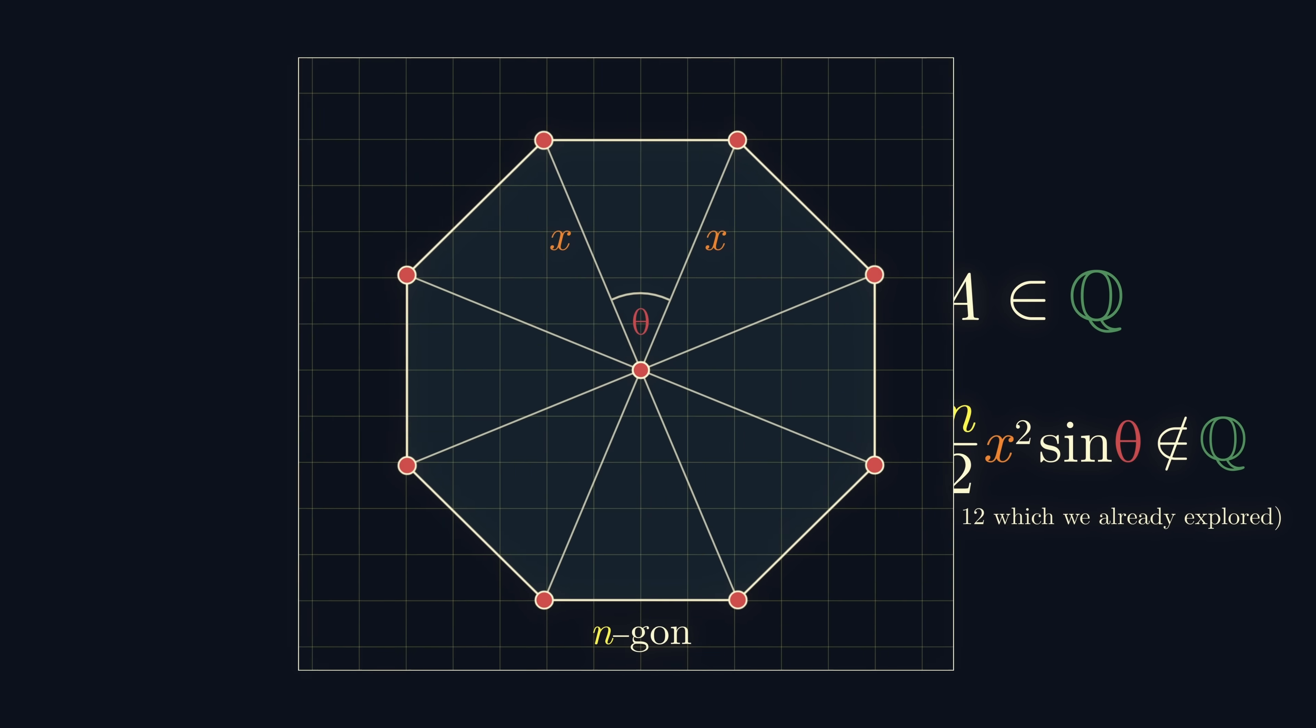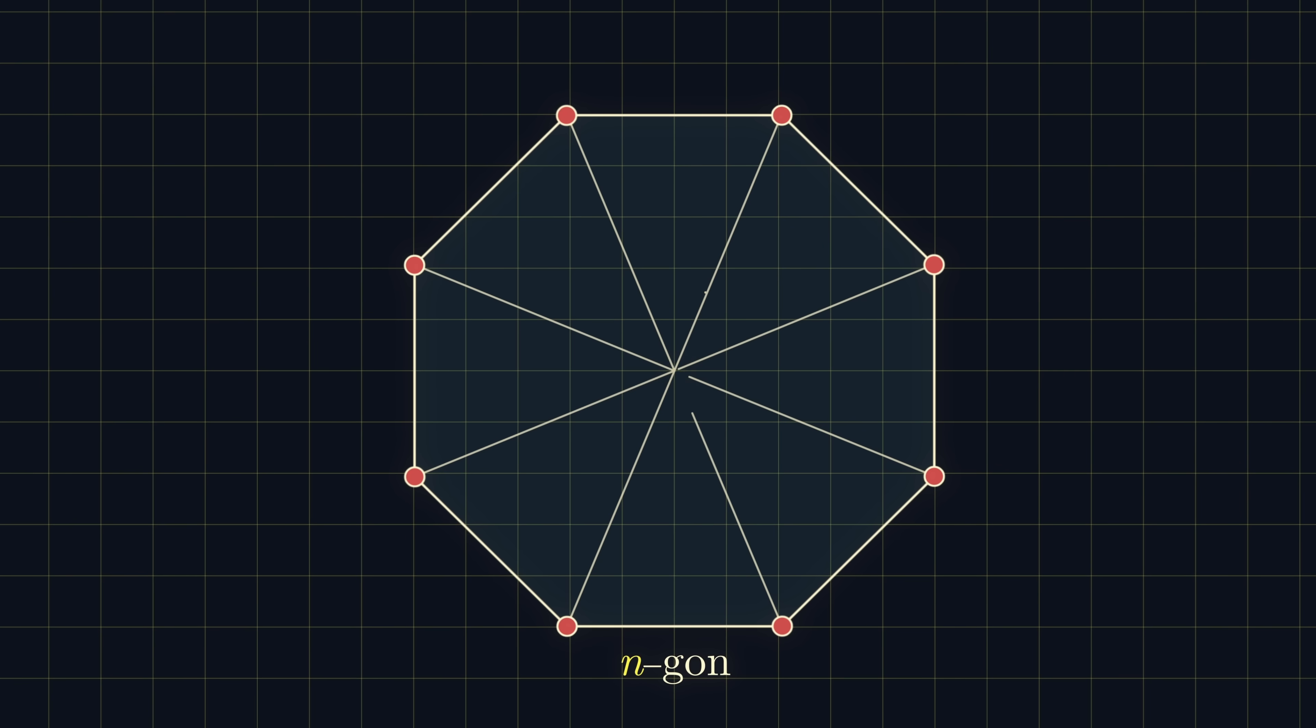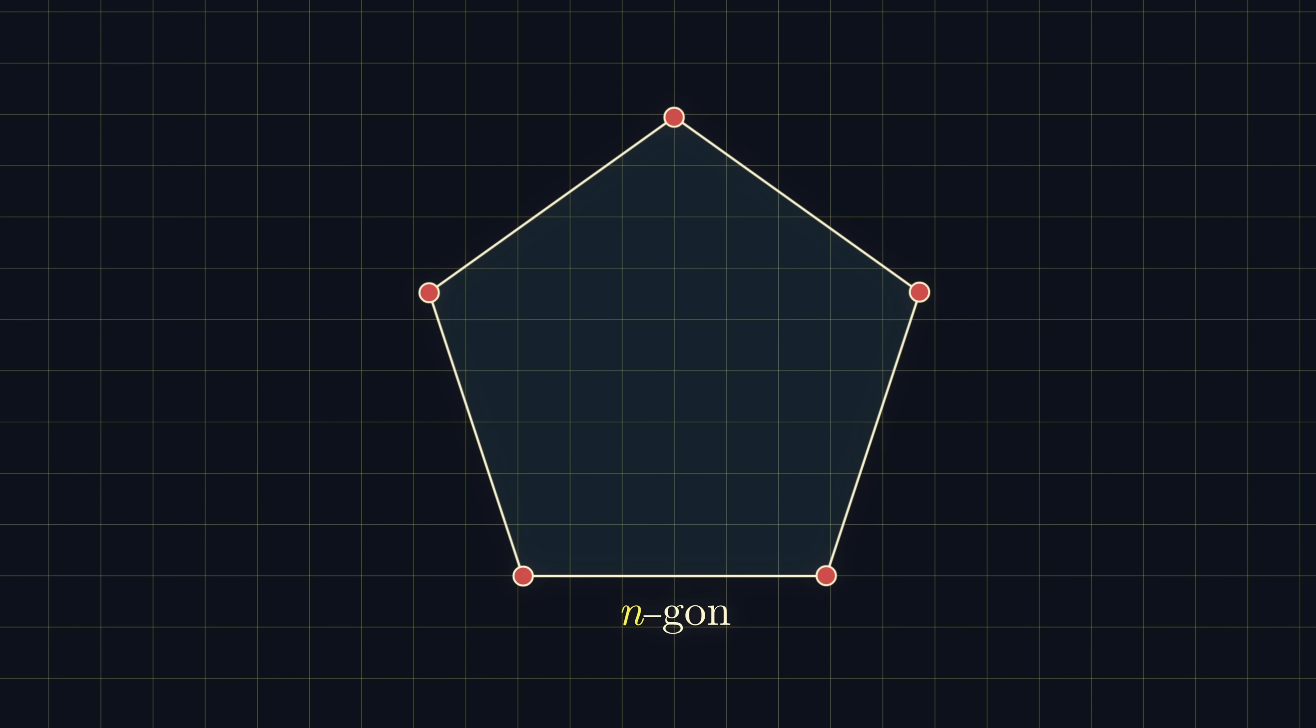So, in the end, despite our optimism, no matter how clever we try to be about drawing a regular polygon on a grid, we can't do it. Well, unless it's a square, of course.